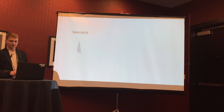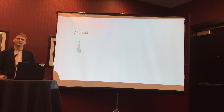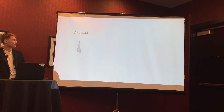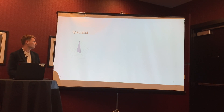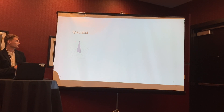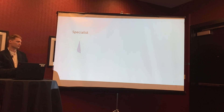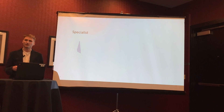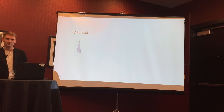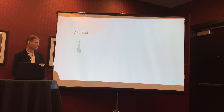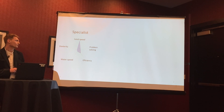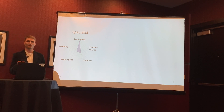First, what does my talk mean? I'm talking about specialized generalists, specialist generalists, and generalized specialists. In robotics, if we have some parameter space with different attributes a robot is trying to perform, a specialist looks something like this — it excels at one of these categories at the expense of others. These could be anything: land speed, water speed, problem solving, dexterity, efficiency — some abstracted attributes.